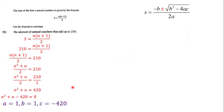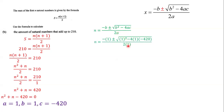Using the quadratic formula, n = (−b ± √(b² − 4ac)) / 2a. Substituting a = 1, b = 1, and c = −420, we evaluate the expression under the square root: 1² − 4(1)(−420) = 1681. So we have n = (−1 ± √1681) / 2, and 2 times 1 is 2.